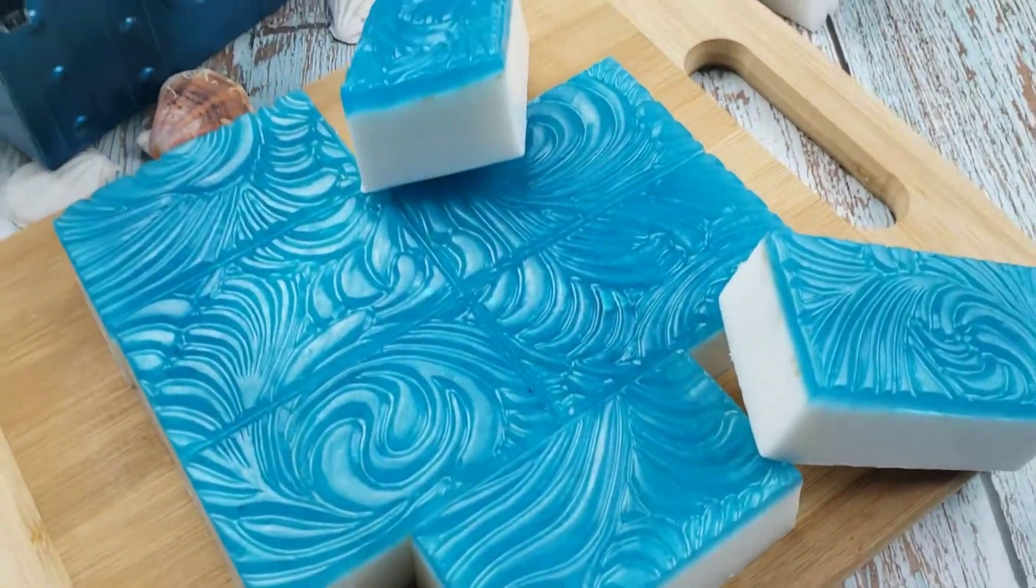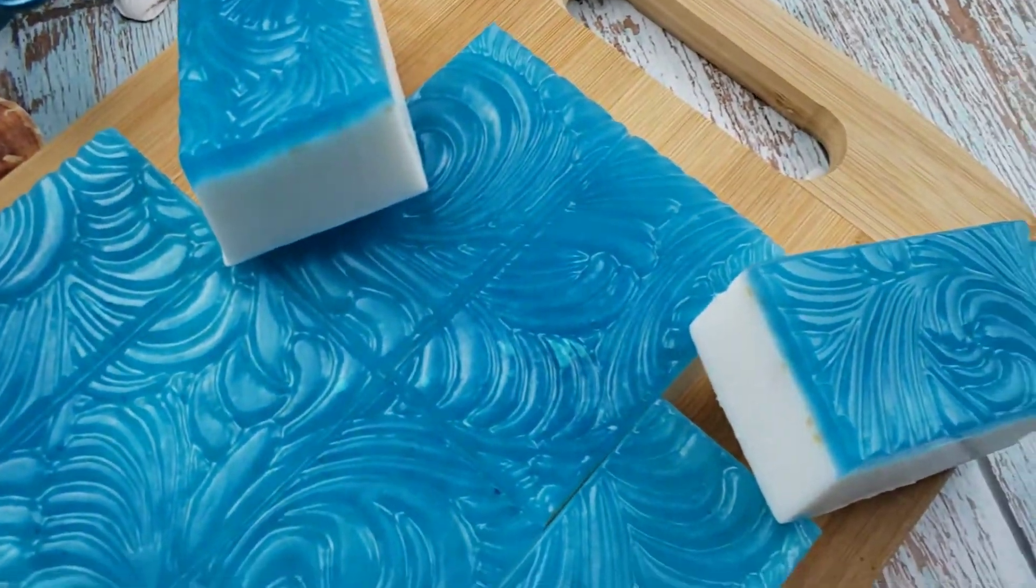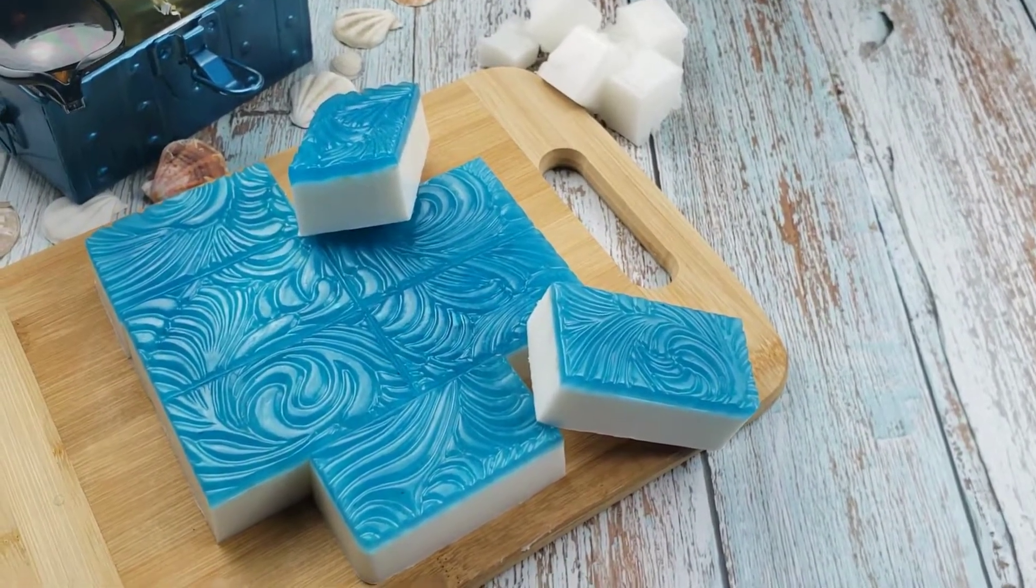Hey everyone, today I'll be making a Majestic Island coconut melt and pour soap with soothing colloidal oatmeal. Let's get right to it.